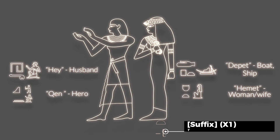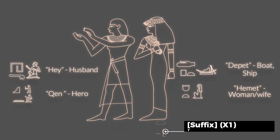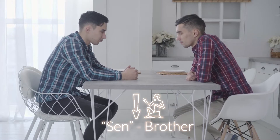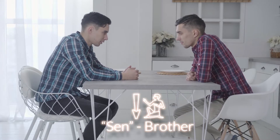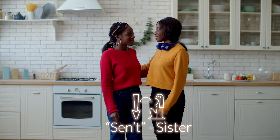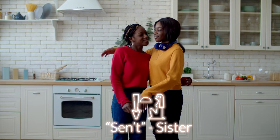Male nouns do not have a suffix to indicate the gender. Female nouns end in a bread loaf, which makes a T sound. For example, you have the word brother, sen, and then you have the word sister, senet.